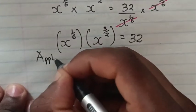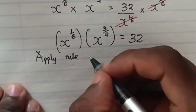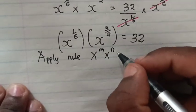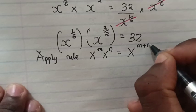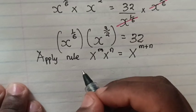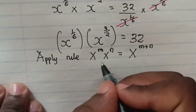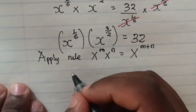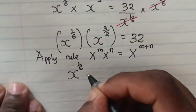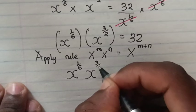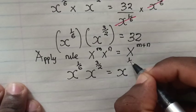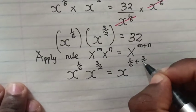We apply the rule that x power of m times x power of n is equals to x power of m plus n. Applying this rule, x power of 1 over 6 times x power of 3 over 2 is equals to x power of 1 over 6 plus 3 over 2, and this equals 32.